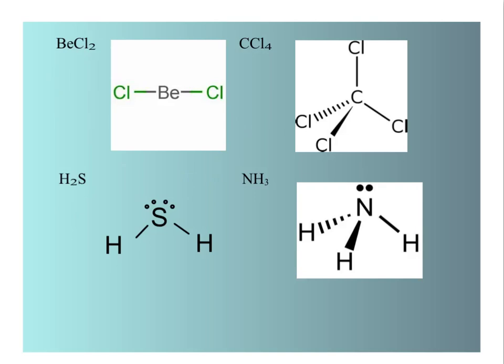In beryllium chloride, the chlorine is more electronegative than the beryllium. So the electrons would be attracted toward the chlorines. However, this is a linear shape, so it's kind of like a tug-of-war for electrons that nobody wins. This is a non-polar molecule.